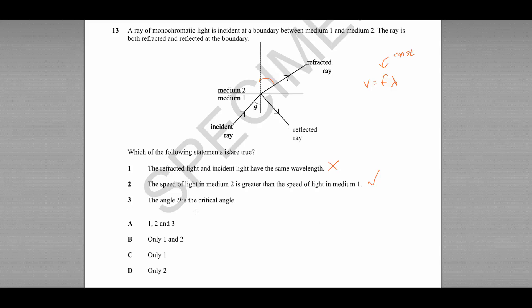Number 3, the angle theta is the critical angle. Well, the critical angle would be the angle at which all of the light is just reflected, and there would be no refraction. We can see that we have some refraction, so it certainly can't be the critical angle, which leaves us with only 2 is correct. Therefore, D is our correct answer.